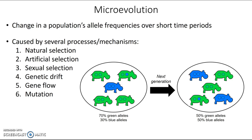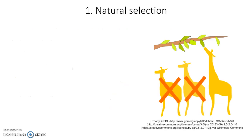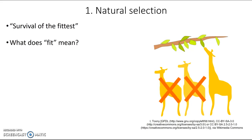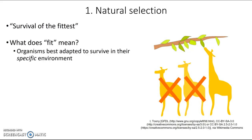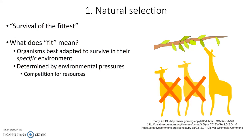The first one we're going to look at is natural selection, which you've heard of before. This is also known as survival of the fittest. But what does 'fit' mean in this context? It means organisms that are best adapted to survive in their specific environment. Fitness is determined by environmental pressures such as competition for resources, predator-prey interactions, climate — whether it's really hot, cold, wet, or dry — disease, and lots of other things.